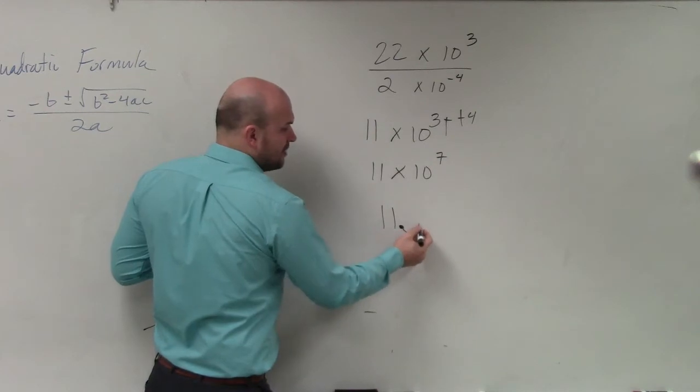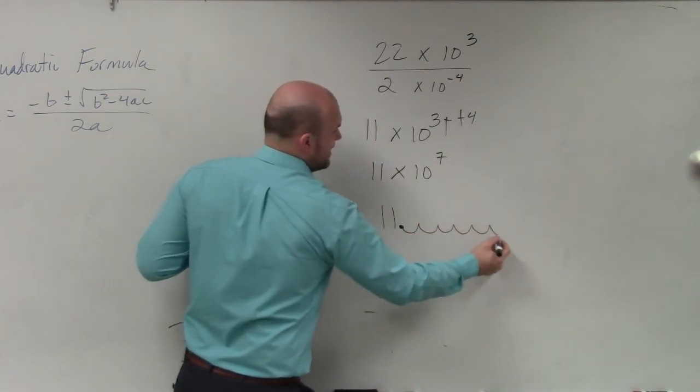And seven zeros look like this: 1, 2, 3, 4, 5, 6, 7.